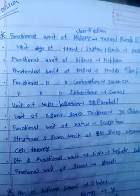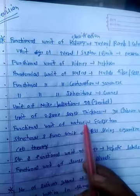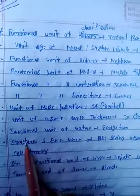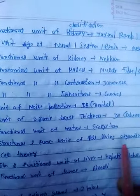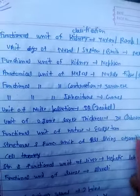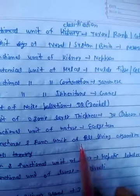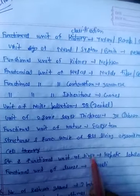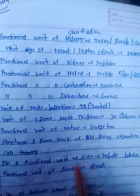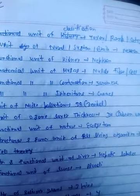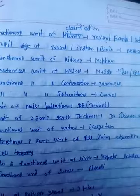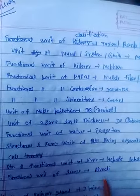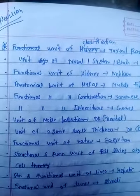The next is the functional unit of all living organisms — the functional and structural unit is the cell. The next is the structural and functional unit of the liver — that is hepatic portal or hepatic lobules. The last is the functional unit of the lungs — that is alveoli.